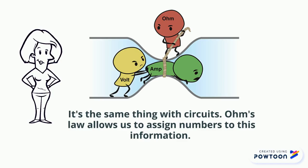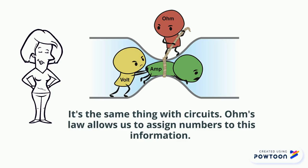This picture is a great representation of Ohm's Law. You can see the voltage is trying to push that current — those electrons — through it. And the Ohm, which is the unit of resistance, is preventing that flow. The more resistance there is, the smaller that hole is, and the less current you can have.